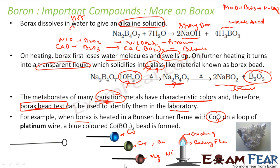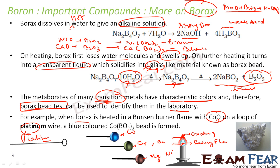The logic here is that borax gives different colors for different transition metals in the bead test, and this differs in the oxidizing and reducing flame. The upper part of the flame is the oxidizing flame and the lower part is the reducing flame. With this, we are able to identify different metals. This is the use of borax here. Please note the platinum wire is used because it is unreactive.